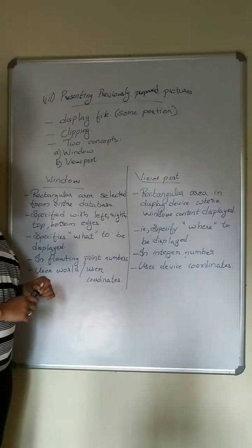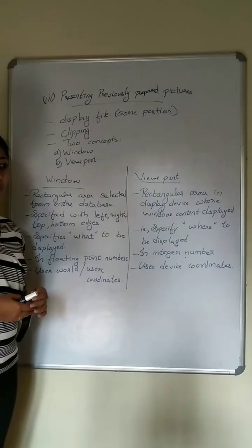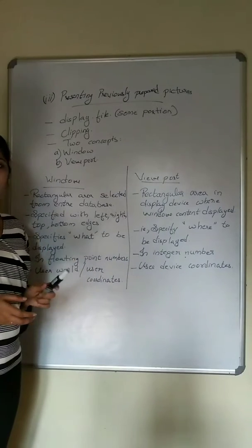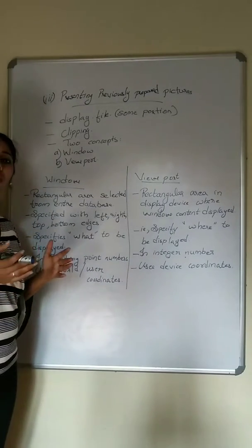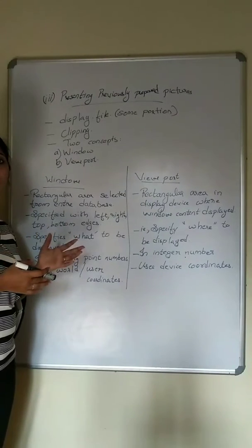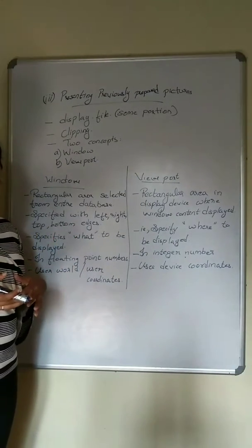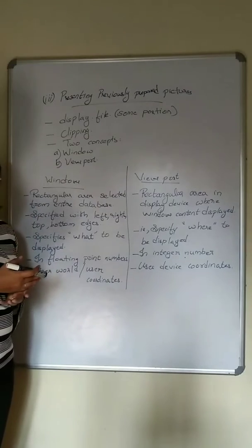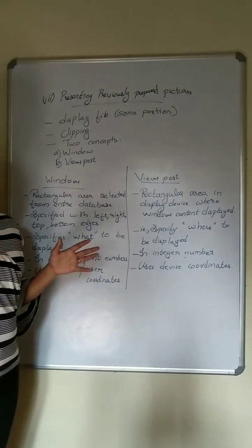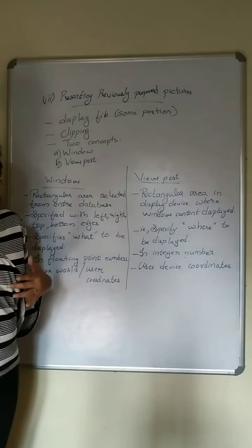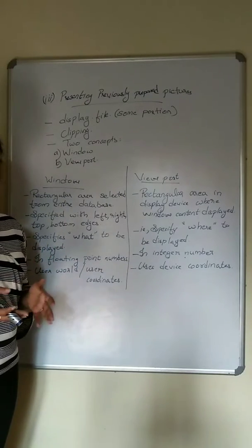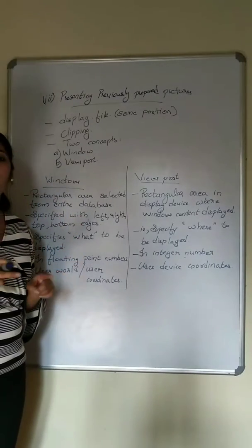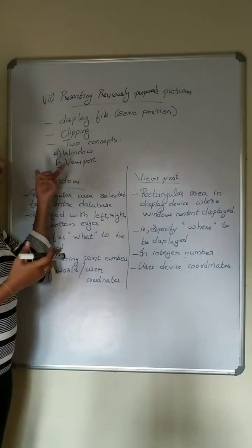The third one is presenting previously prepared pictures. The display file is the main concept here. The data that is used for preparing the pictures is called the display file. The entire database is not always necessary, so we need to clip the unnecessary portions and select only the portion that we need. For that, we use clipping.